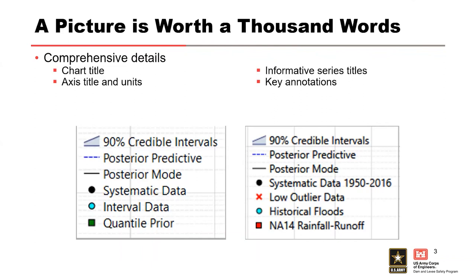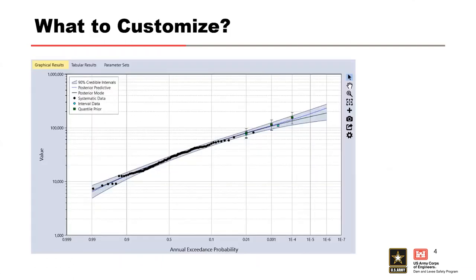The interval data title was changed to read historical floods, and the quantile prior title was changed to indicate that NOAA Atlas 14 rainfall runoff modeling was used to develop the quantile priors. This adds more information so someone can glance at your plot and understand what the information represents.